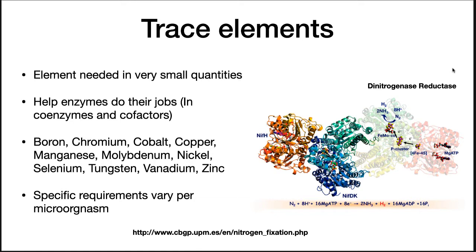Trace elements will carry out some chemistry for one or a few enzymes. They are necessary for certain enzyme functions, so these elements are absolutely required, just in tiny amounts. Some examples include things like boron, chromium, cobalt, copper, etc.